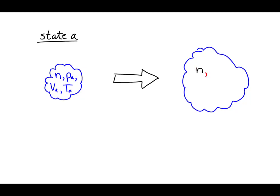At state B, the gas has n moles, pressure PB, volume VB, and temperature TB. These state variables describe state B of n moles of the ideal gas.